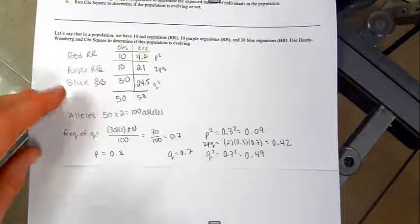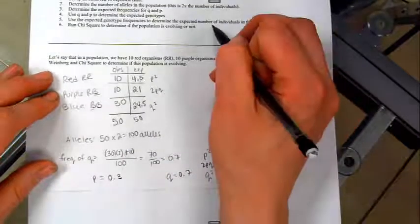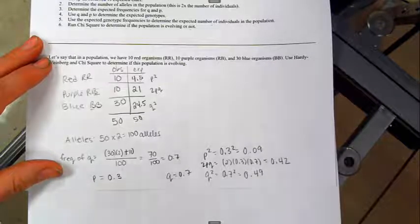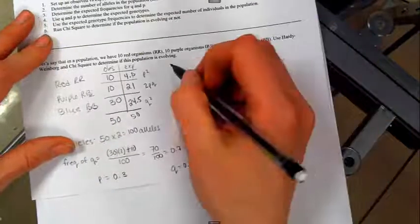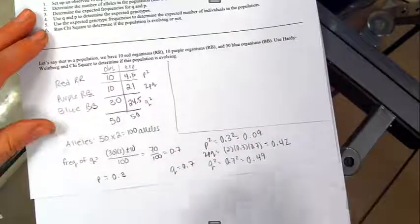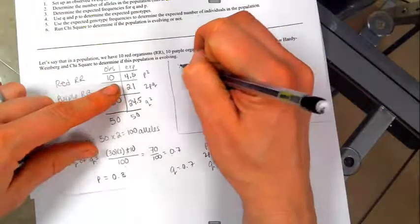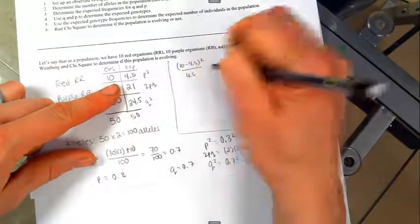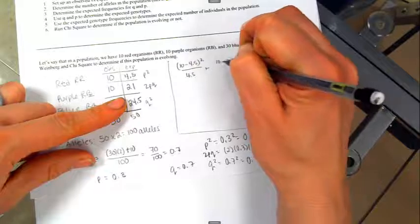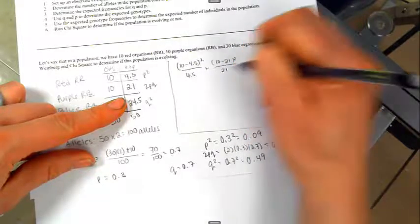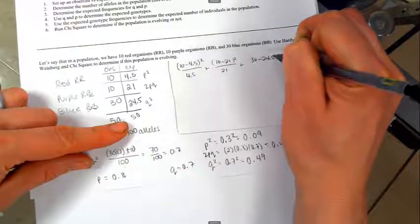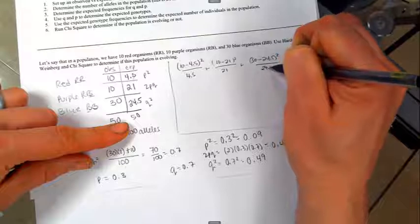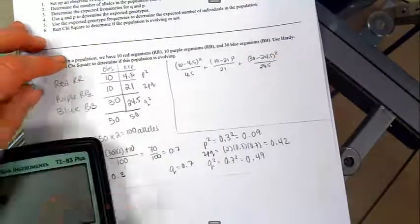We are not done with this problem yet. We are only through step 5. Step 6 is to chi-square this and see if the population is evolving or not. I do have room right here, so I'm going to go ahead and do this right here. We're going to take our observed minus expected squared divided by expected for each situation.